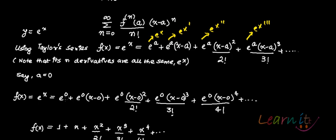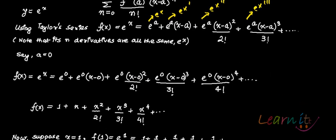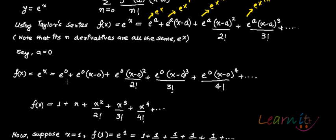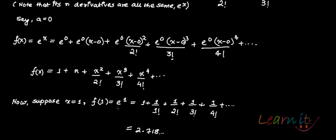If we want to calculate at a = 0, we substitute a = 0 into all the terms. We get: e^0 + e^0·(x - 0) + e^0·(x - 0)^2 / 2! + ... Since e^0 = 1, this simplifies to 1 + x + x^2/2! + x^3/3! and so on.